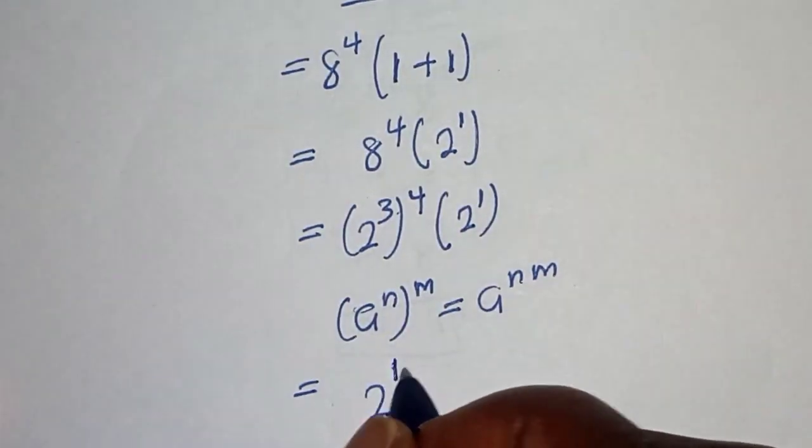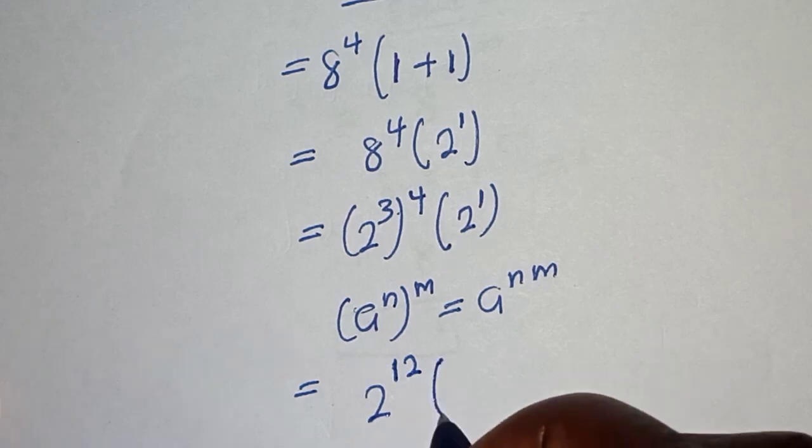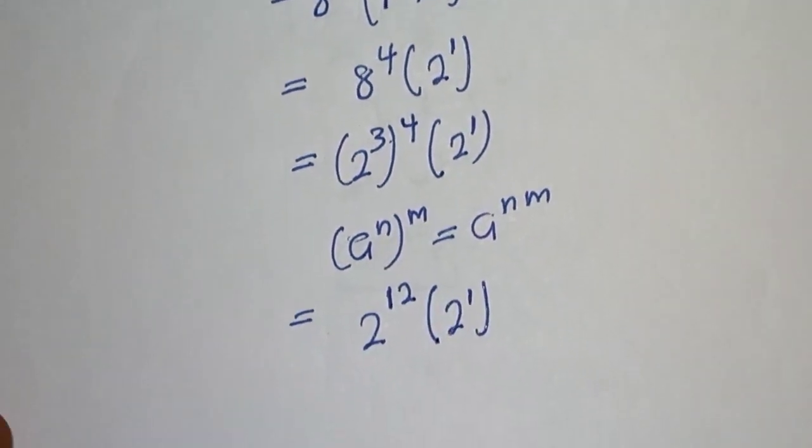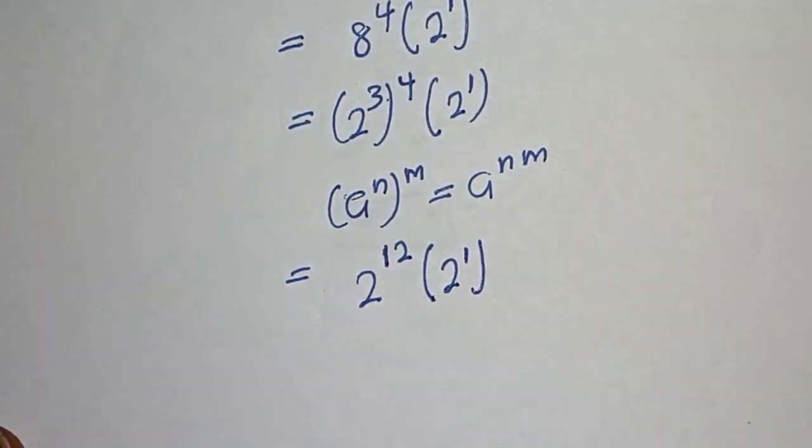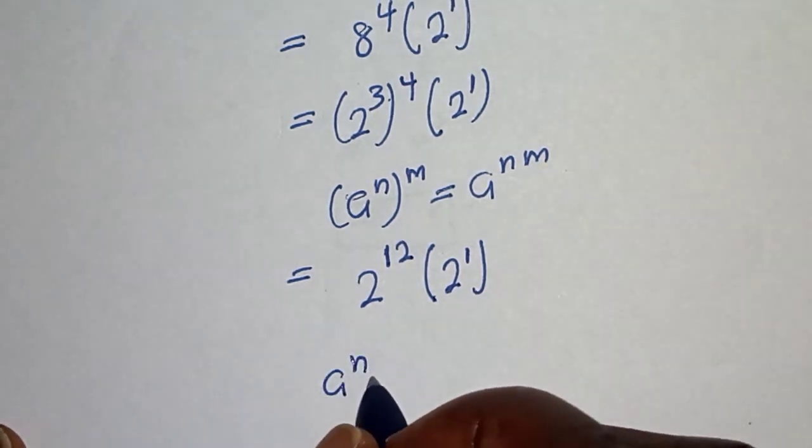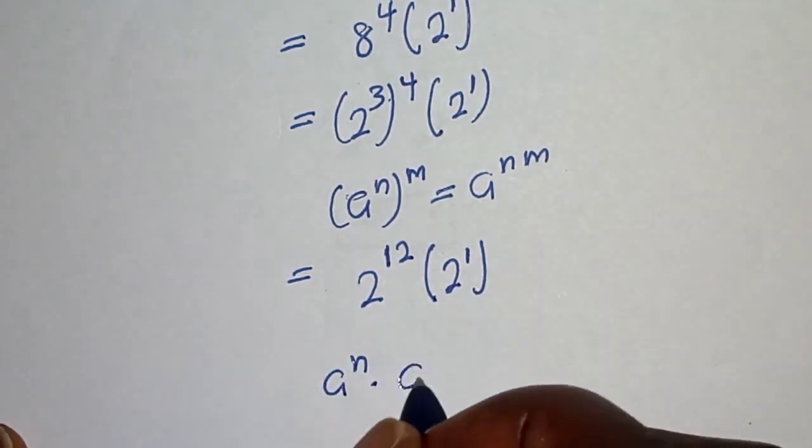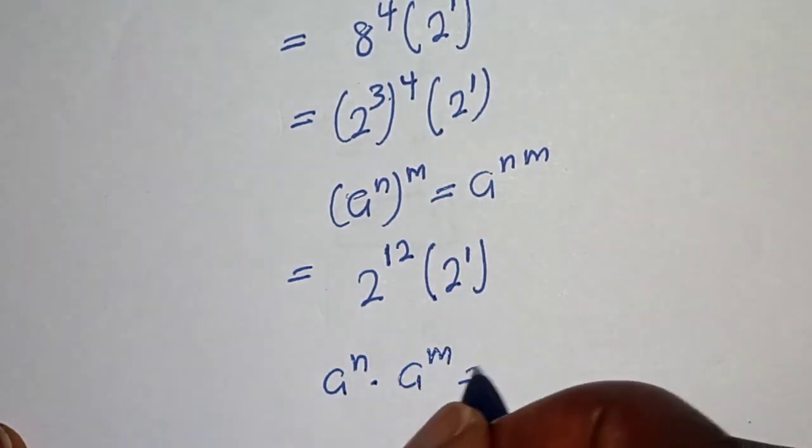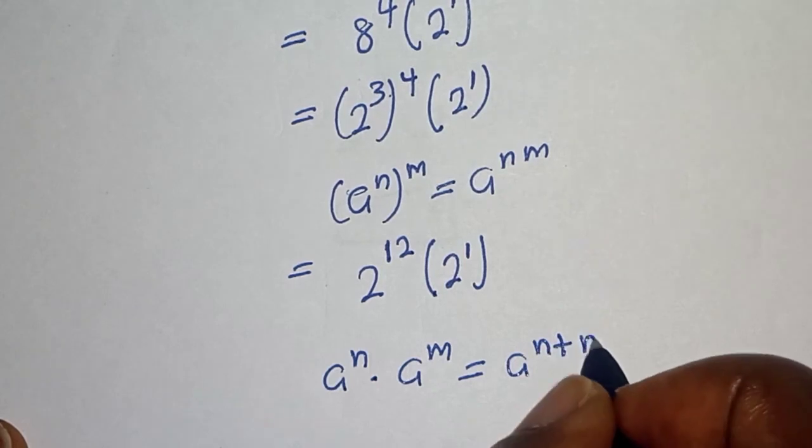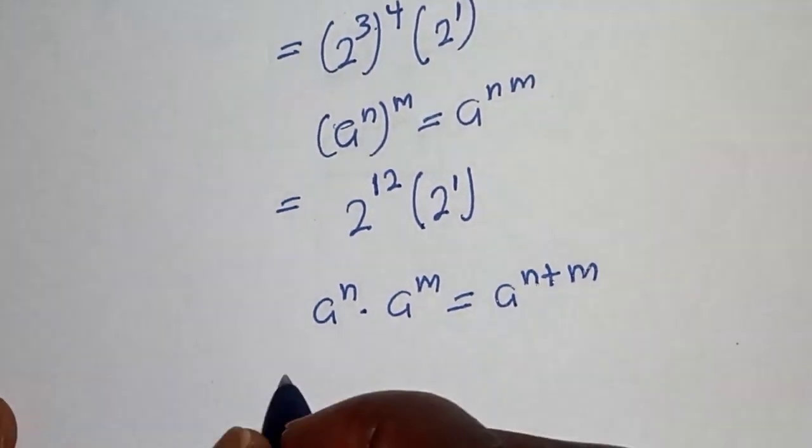Which is 2^12, times bracket (2^1). Also, if you have a^n multiplied by a^m, this is equal to a^(n+m). And then this is equal to 2^(12+1).